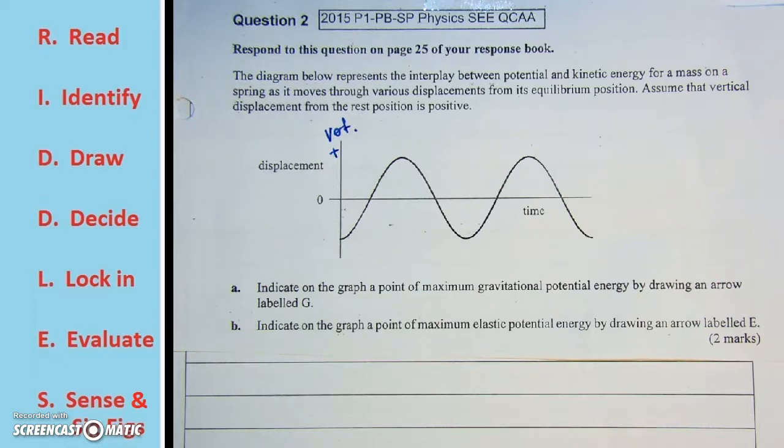Part A, indicate on the graph a point of maximum gravitational potential energy by drawing an arrow and labeling it G. So therefore,